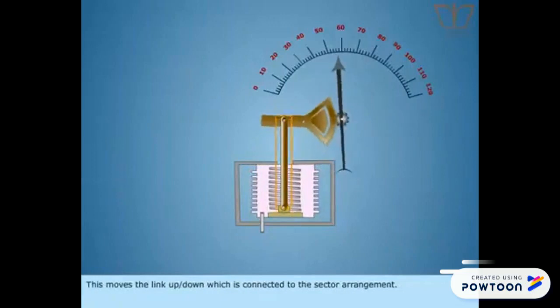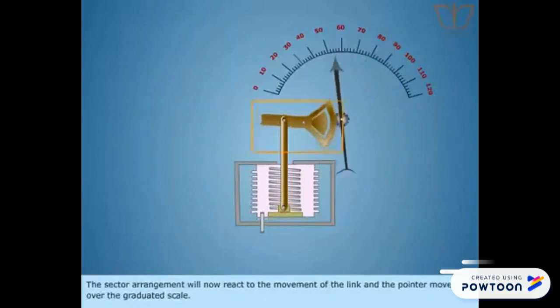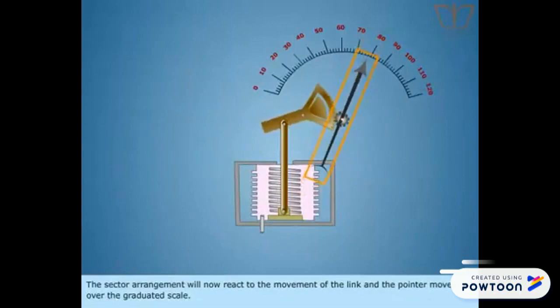This moves the link up or down which is connected to the sector arrangement. The sector arrangement will now react to the movement of the link and the pointer moves over the graduated scale. The readings on the graduated scale indicates the pressure value.